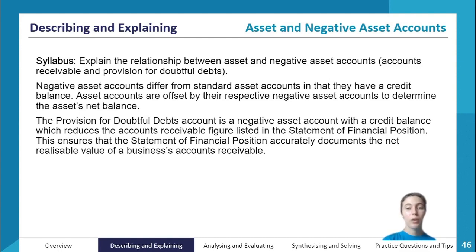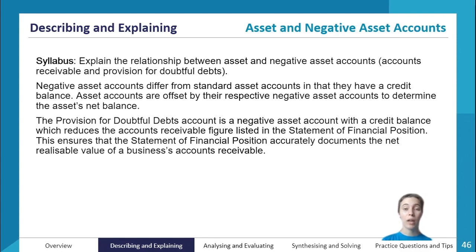We're looking at asset and negative asset accounts. The syllabus asks that you need to be able to explain the relationship between asset and negative asset accounts — specifically accounts receivable and provision for doubtful debts. Negative asset accounts differ from standard asset accounts because they have a credit balance by nature, whereas normal assets have a debit balance by nature.